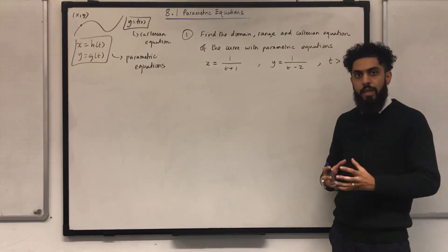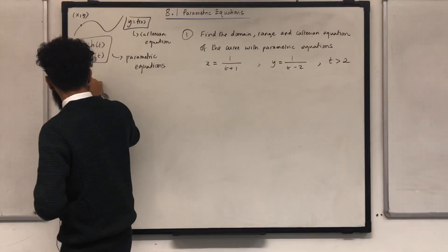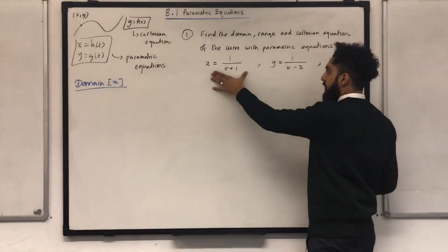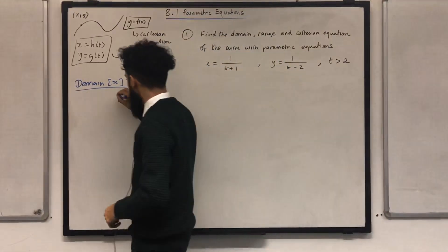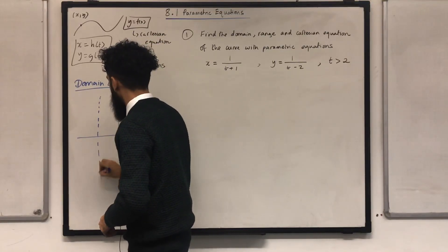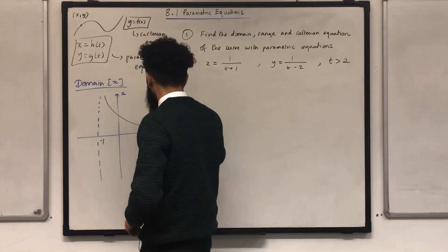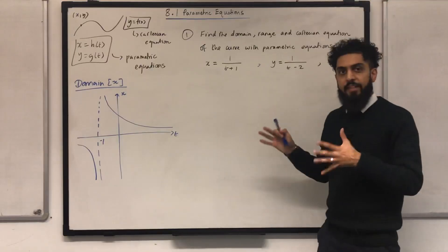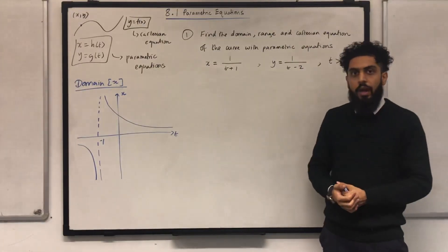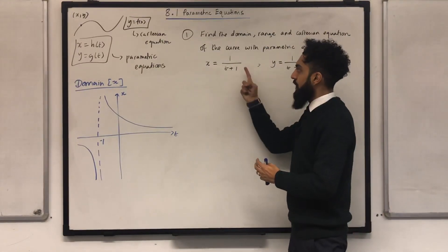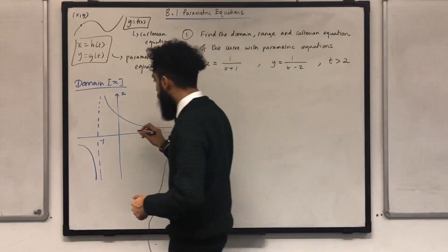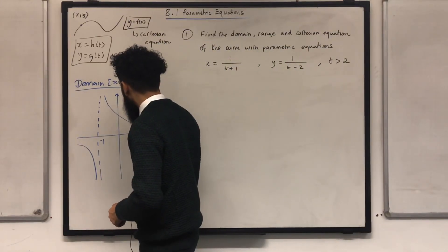I'm going to start off with the domain, which represents x. My first step is to sketch x against t for t any real number. Now I'm going to restrict this particular graph for t is greater than 2. I start by putting t equal 2 into this equation: x equal 1 over 2 plus 1, which is 1 over 3. So at t equal 2 I have x equal 1 over 3.